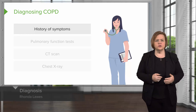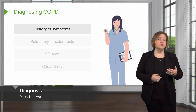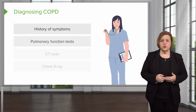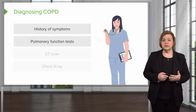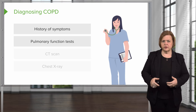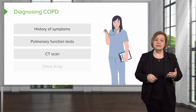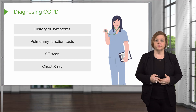Now how do we diagnose COPD? We're going to get a really complete history of symptoms from the patient. We might do some pulmonary function tests that give us specific numbers on how well the patient's able to breathe. We also might look at a CAT scan or a chest x-ray.